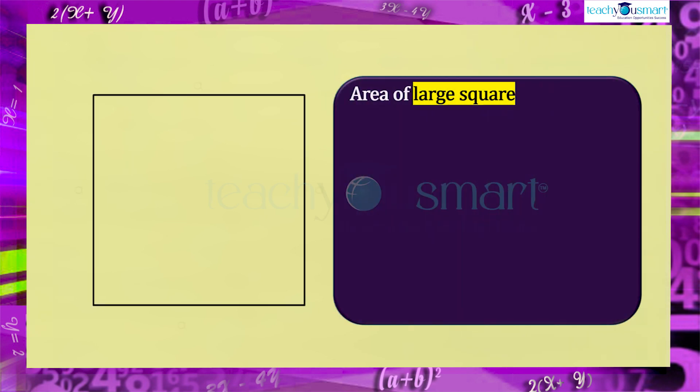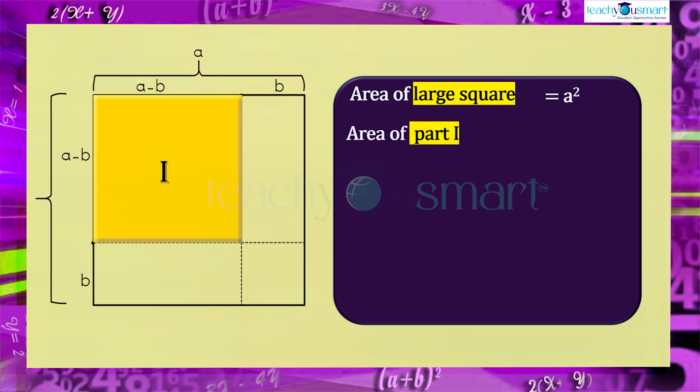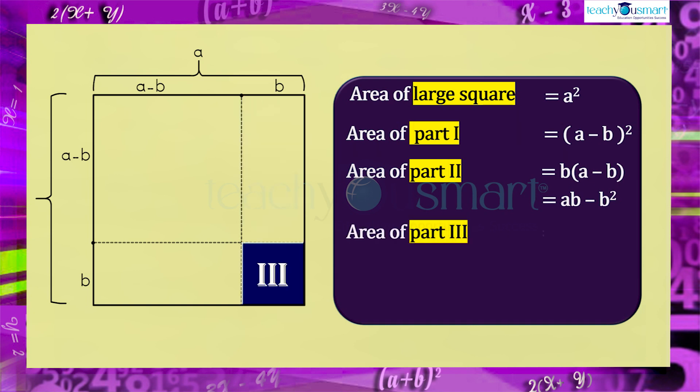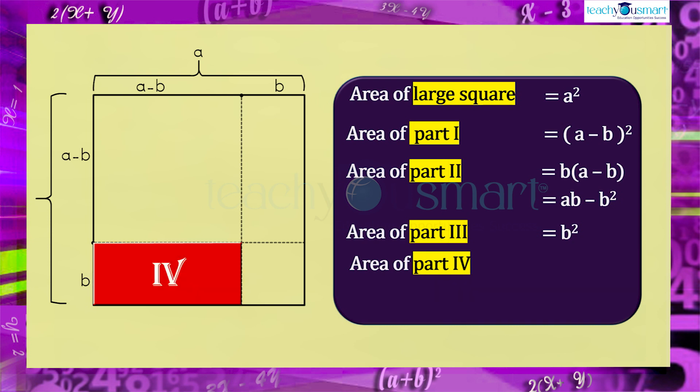Area of the large square equals a square. Area of part one equals (a minus b) the whole square. Area of part two equals b multiplied by (a minus b) equals ab minus b square. Area of part three equals b square. Area of part four equals b multiplied by (a minus b) equals ab minus b square.